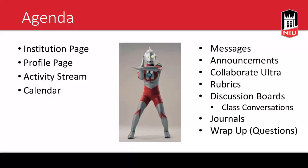We're going to start on the left with what I'd call passive communication tools — tools you don't have a whole lot of control over. On the right side are tools where you as an instructor or owner of the Blackboard course organization have a lot of control over what's going on and how it's set up. The first four are basically on the institution page.